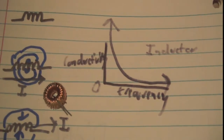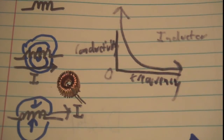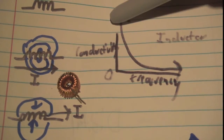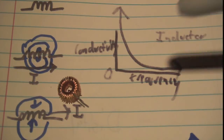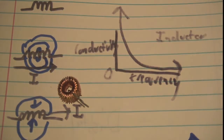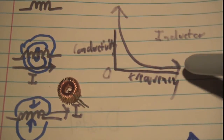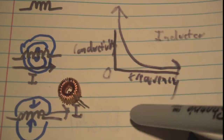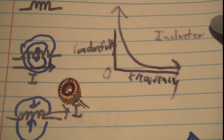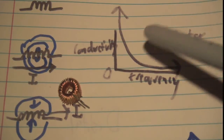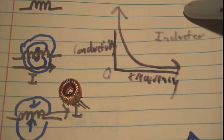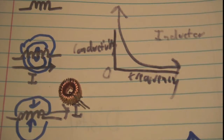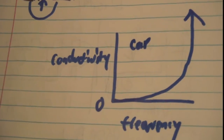If the magnetic field doesn't have to change, it has nothing to resist, and the magnetic field will be really happy. But as the frequency goes up, the conductivity goes down because the magnetic field has to change more and more. So it behaves more like an open gap rather than a short circuit as the frequency goes up. As the limit as frequency approaches infinity, the inductor conductivity approaches zero, and as frequency approaches zero, it approaches infinity — meaning at DC it's a short circuit, and at higher AC frequencies, it becomes less and less conductive.